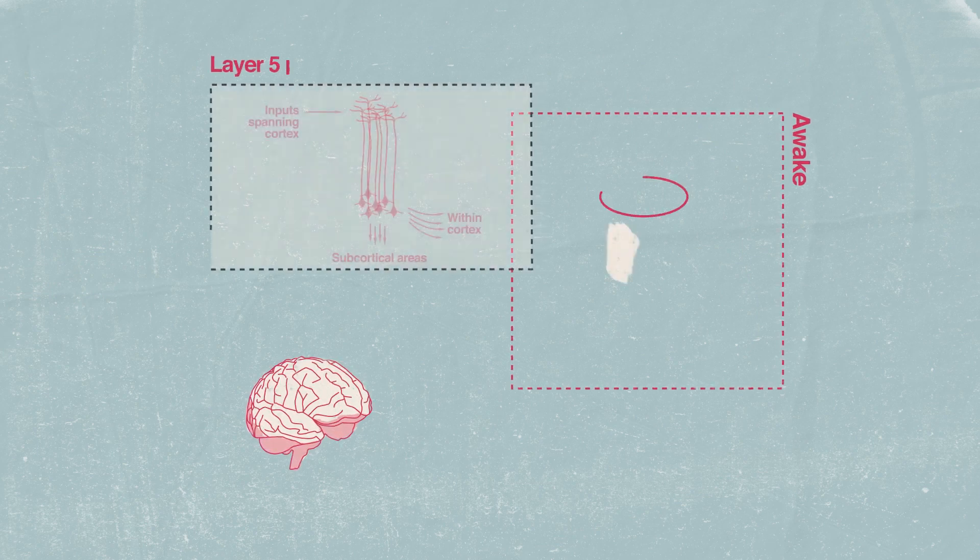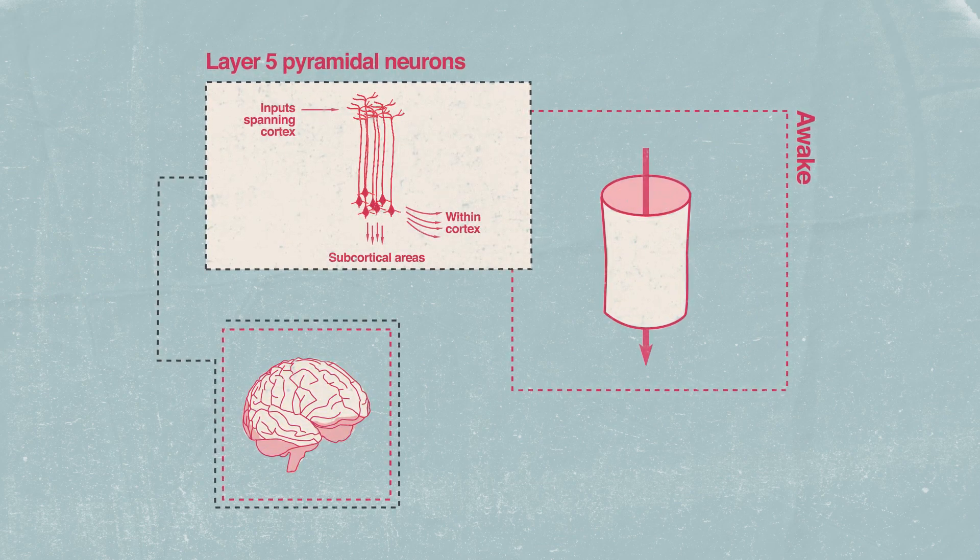In the same way, when we are conscious, information flows both within cortex and throughout the brain.